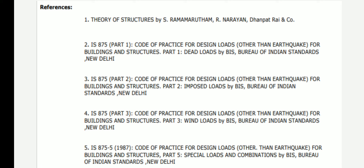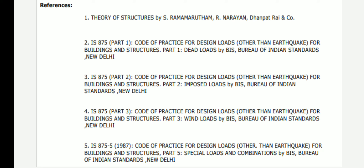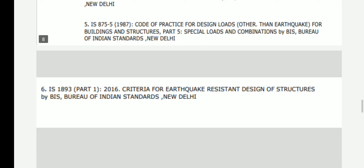For reference, IS 875 Part 1 can be used for dead loads, IS 875 Part 2 for live loads, IS 875 Part 3 for wind loads, IS 875 Part 5 for special loads, and IS 1893 can be referred to for earthquake loads.